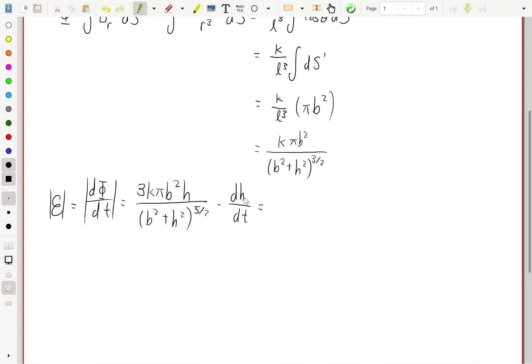But since dh over dt is just the speed v of the particle, or the magnet, we can rewrite this as 3k pi b squared h times v over b squared plus h squared to the power of 5 over 2.